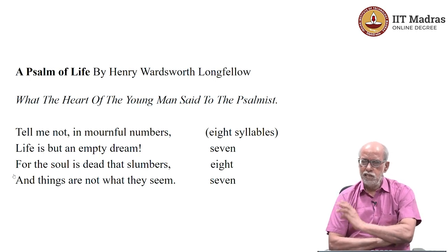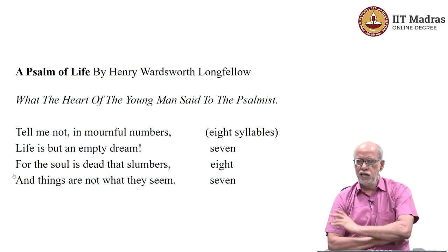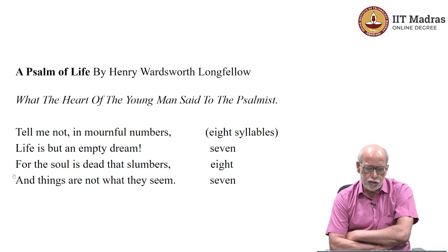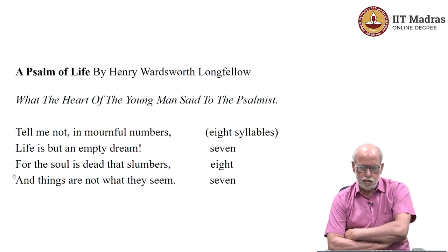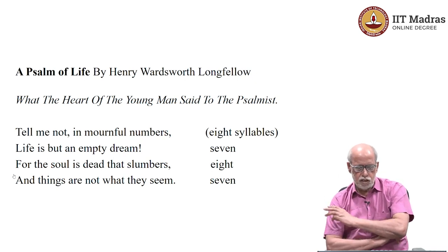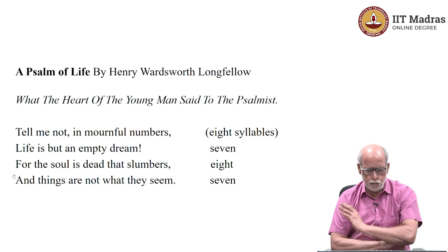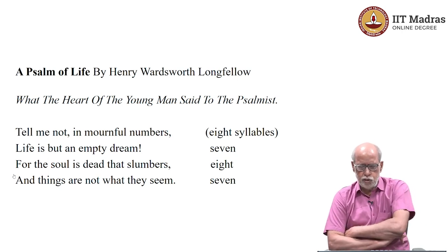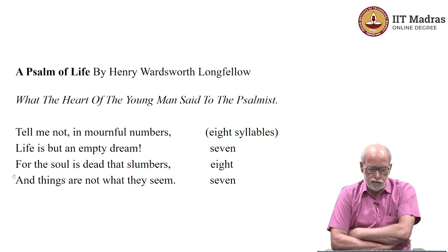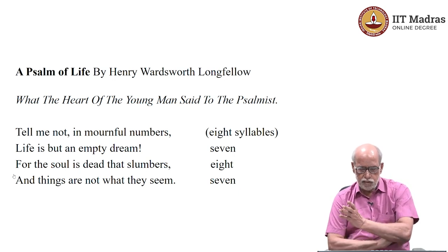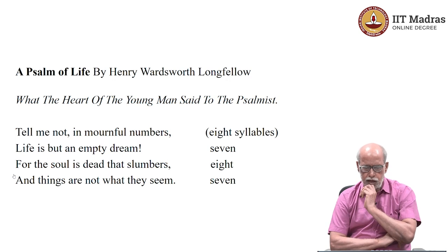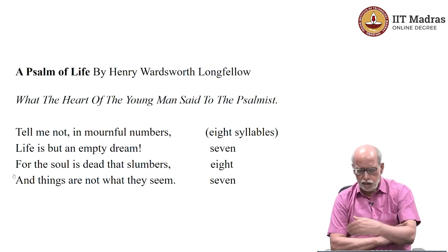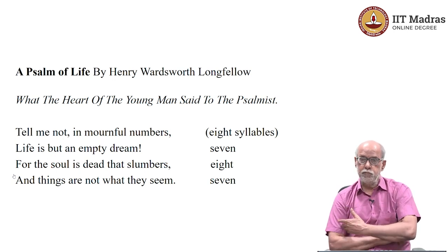Look at the line and count the number of syllables and you will find a regular pattern. In the first line, 'tell me not in mournful numbers,' there are eight syllables. But in the next line, 'life is but an empty dream,' there are only seven — 'life is but' is three syllables, 'empty' has two, plus 'dream,' giving seven. It alternates: eight syllables, seven syllables, eight syllables, seven syllables — and with rhymes: first line rhymes with third, second line rhymes with fourth.